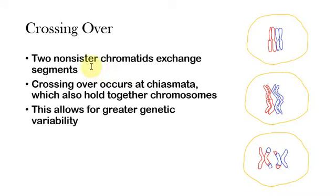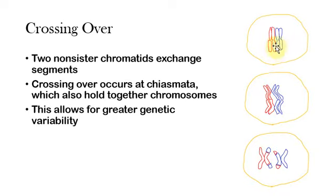Essentially, there are going to be two non-sister chromatids from homologous chromosomes. If you remember, homologous chromosomes are chromosomes that code for all of the same genes. Two non-sister chromatids, meaning they're not identical, but they're homologous — they're going to exchange certain segments of those chromosomes.